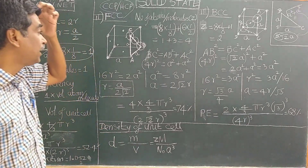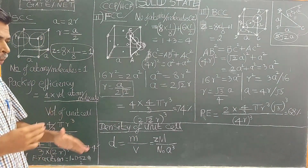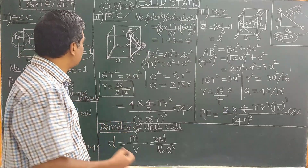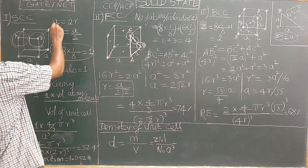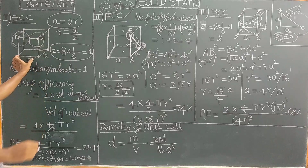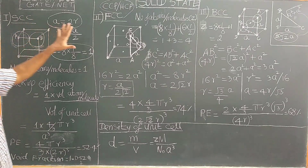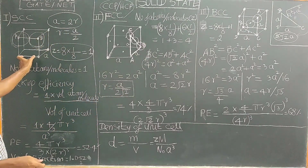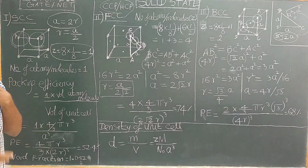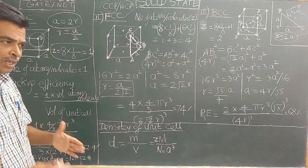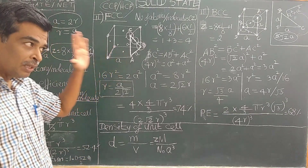Good morning. In this, we will study about solid state physics or solid state chemistry. This subject is common for physics major and chemistry major. Let us discuss today mainly the relation between A and R — edge length or unit cell length — and the radius of the atom. This is very important. We need to understand the concept.